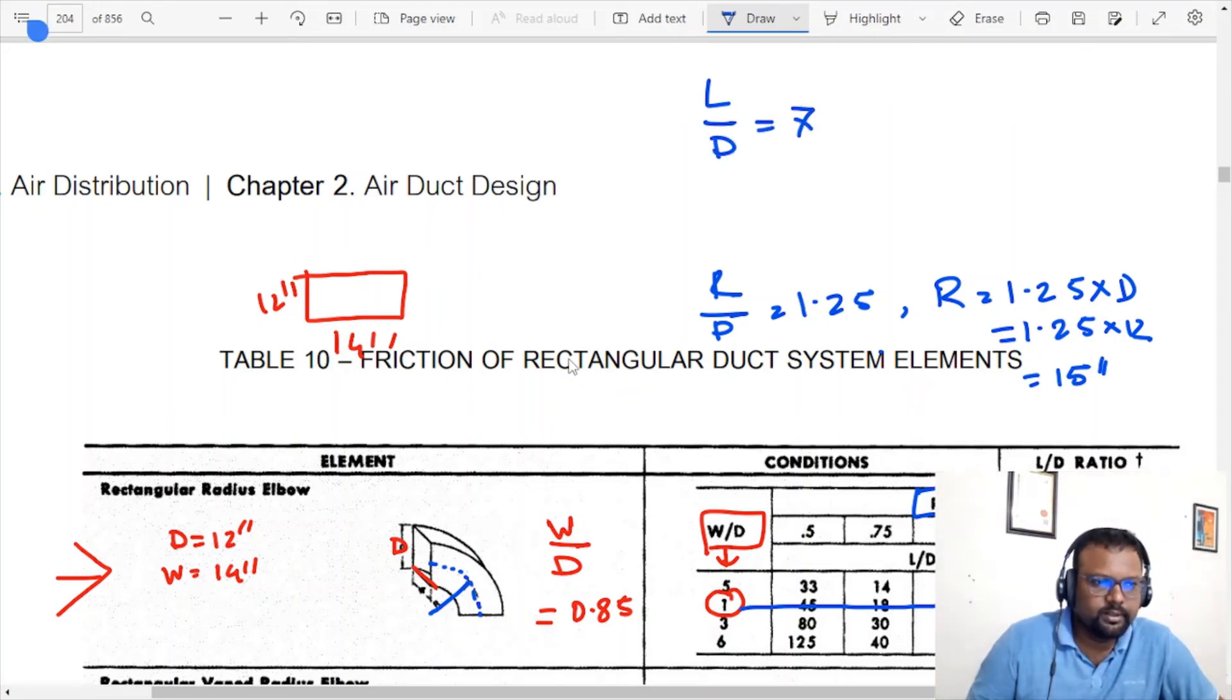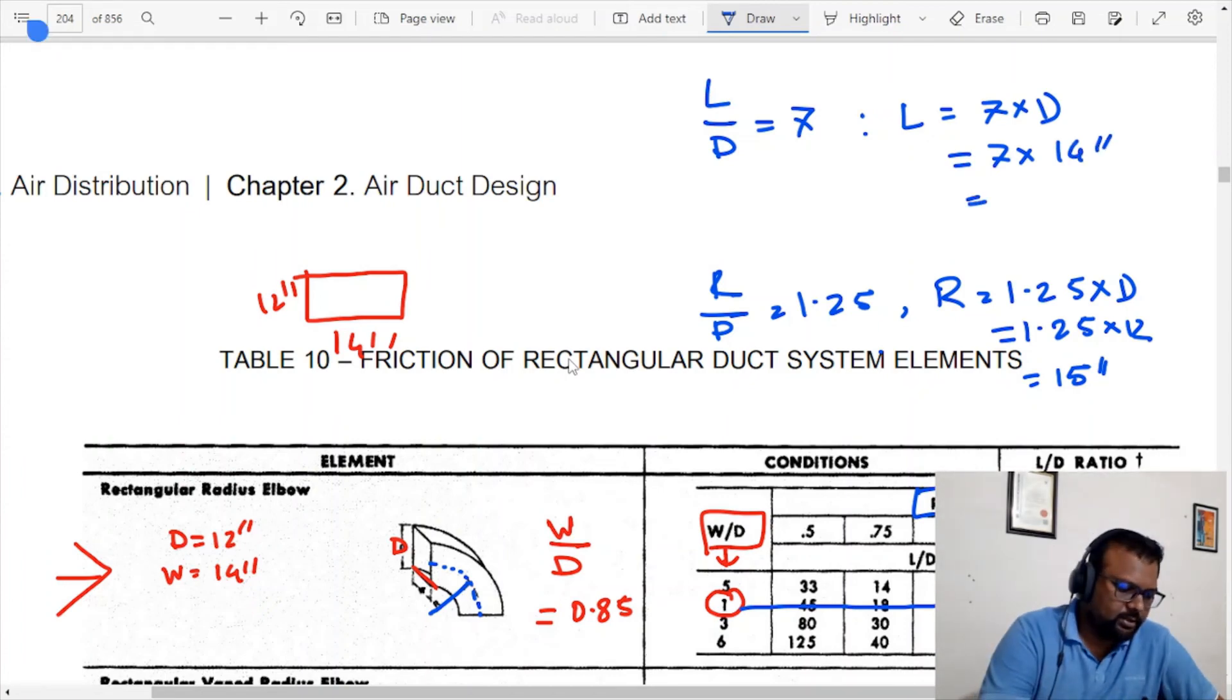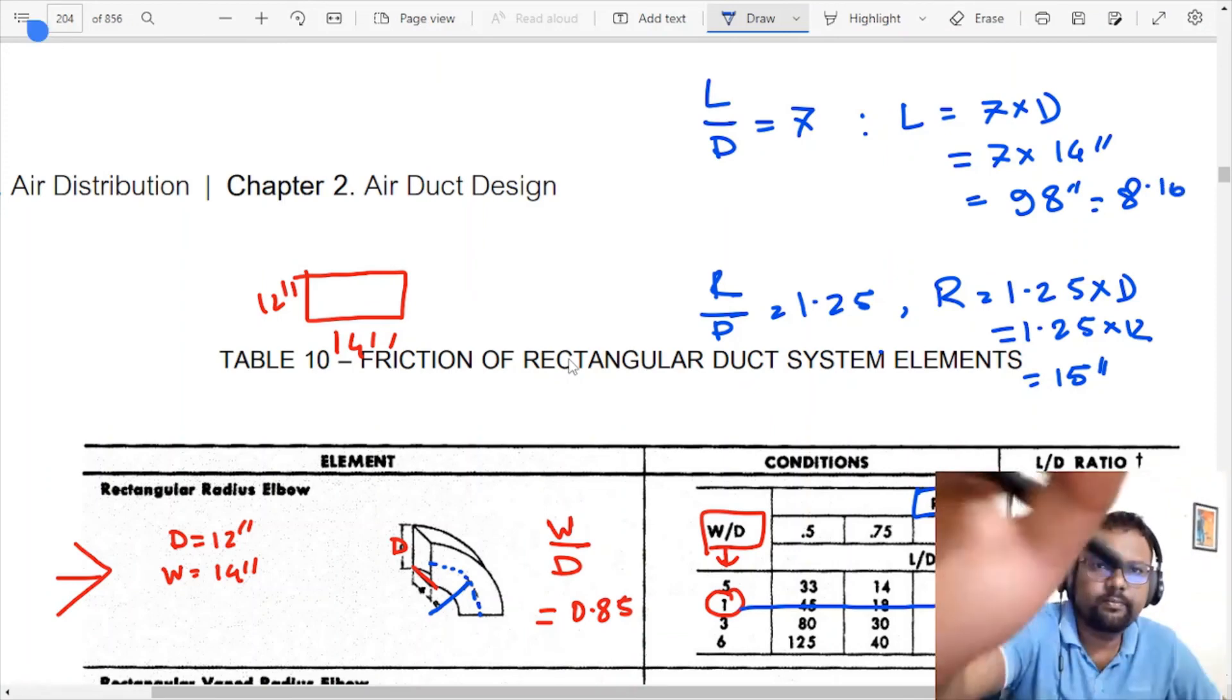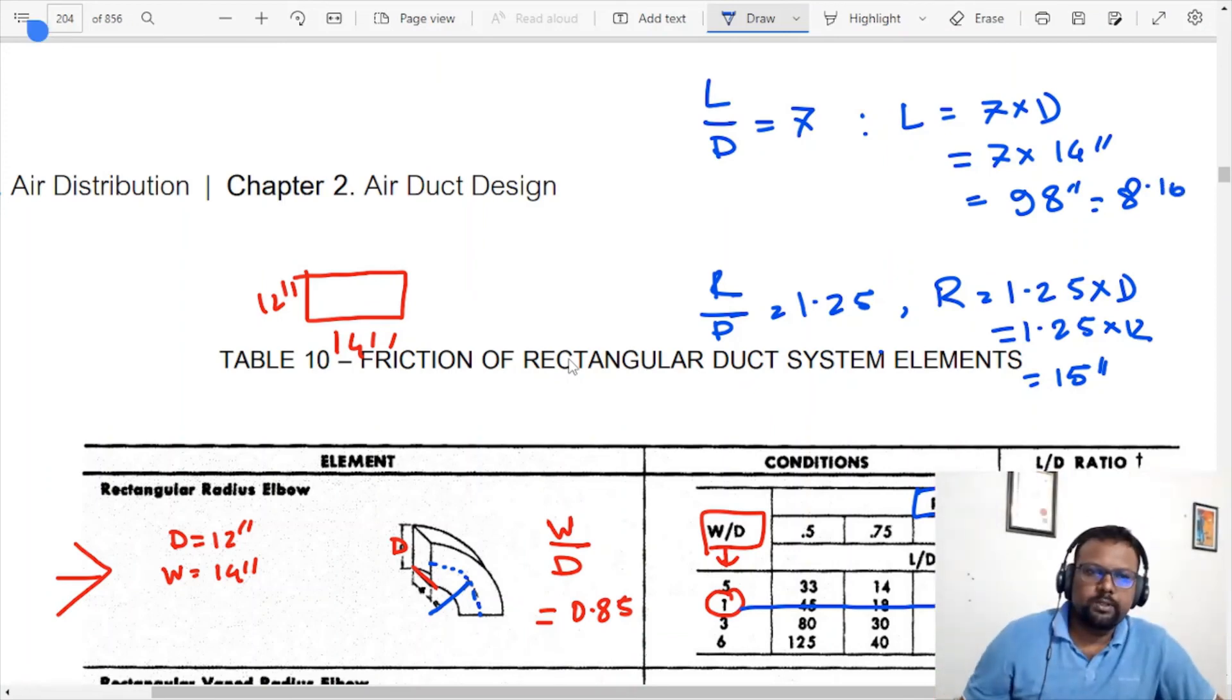Equivalent L equals 7 into D. 7 into D, which is 14 inches, so 7 into 14 equals 98 inches. Converting to feet, that's 8.16 feet. This is how you find it for a straight duct.